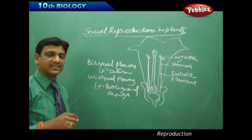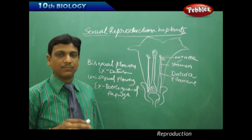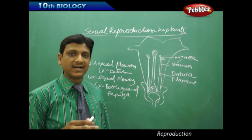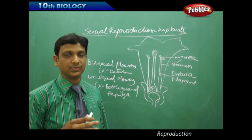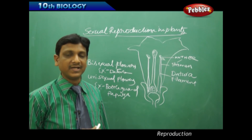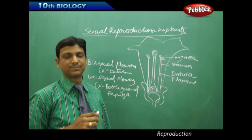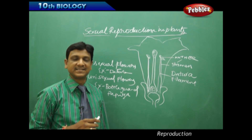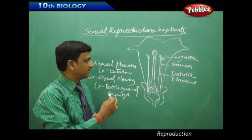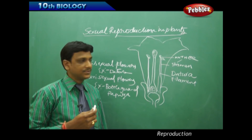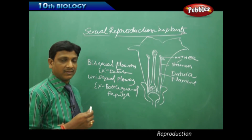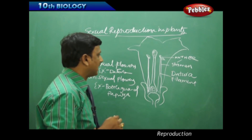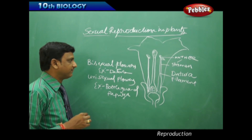The anther consists of pollen sacs, and the pollen sacs consist of pollen grains. The pollen grains contain the reproductive cells, so they are considered the male gametes. Each pollen grain consists of two sperm cells, which will fertilize the egg cell in the female reproductive part. Pollen grains are the male gametes produced in the anther part of the flower.